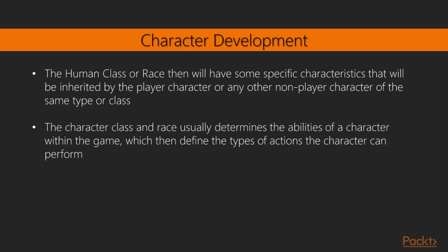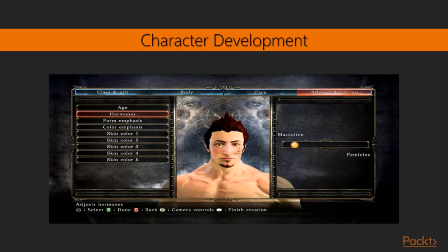This will be tightly coupled to your storyline. For instance, the player character is technically the hero of the story. The hero is usually of a certain character class — let's assume the hero is part of the human class. The human class then will have specific characteristics inherited by the player character or any non-player character of the same type. The character class and race usually determines the abilities of a character, which defines the type of actions the character can perform.